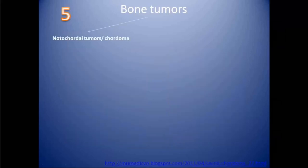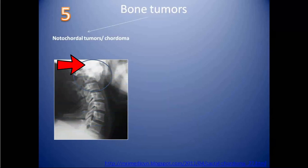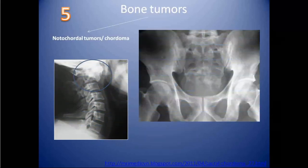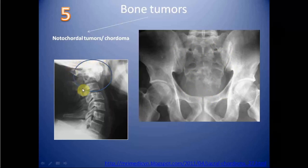The next category includes notochordal tumors, or chordomas. These are uncommon malignant tumors of the axial skeleton that originate from embryonic remnants of the primitive notochord. They are locally aggressive and are seen in middle-aged and elderly adults. The classic location is the sacrococcygeal region, followed by the spheno-occipital area. The tumor can have internal irregular calcification. The major differential diagnosis is chondrosarcoma — if the lesion is in the midline it is more likely chordoma, and if it is paramedian or off midline it is most likely chondrosarcoma.